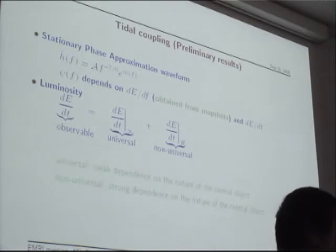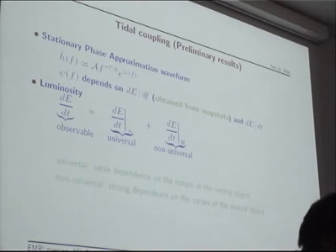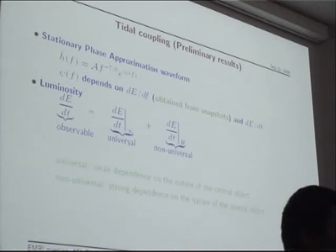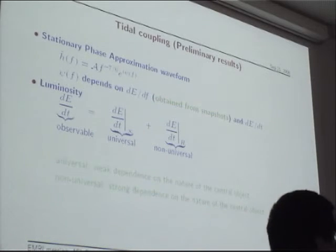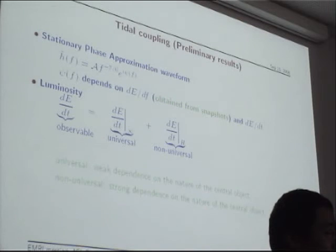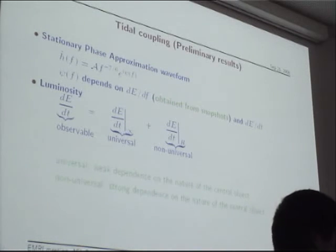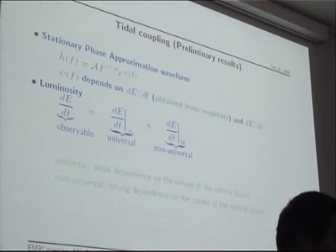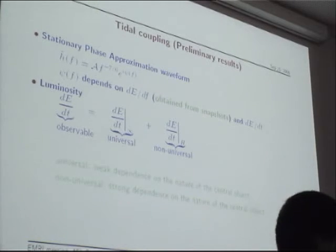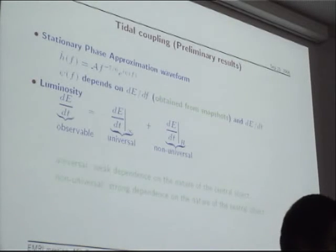On the other hand, the inner boundary condition influences the total luminosity function, which in turn changes the dynamics of the EMRI system. So before numerical relativists can solve this system, we must clarify what the appropriate inner boundary condition is.